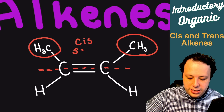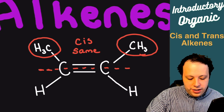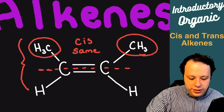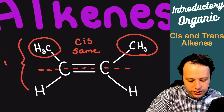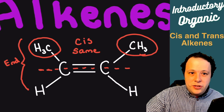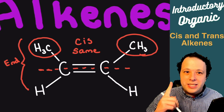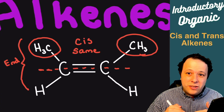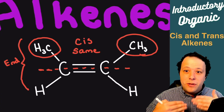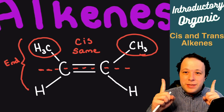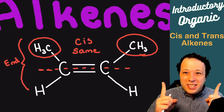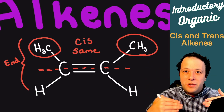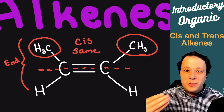Cis means same. The entire idea here is that whenever you have these differences, on each end there needs to be two completely different groups. You can see I have the methyl and also the hydrogen on the left — they're both different from each other, so it needs to be different on both sides. Both methyls are together, so this is referred to as cis.